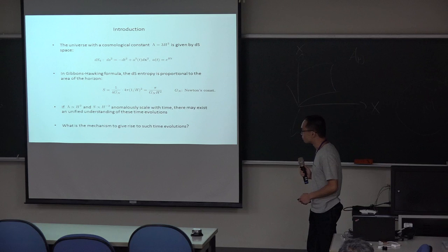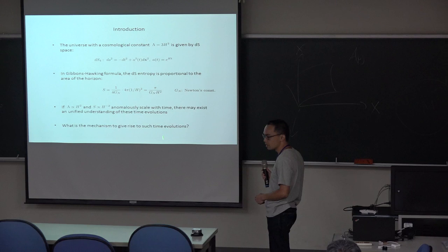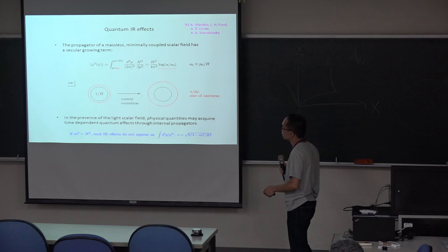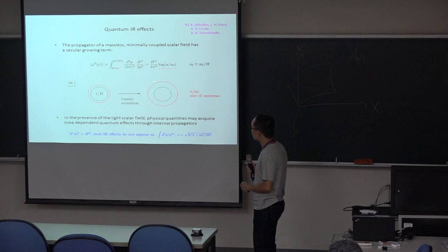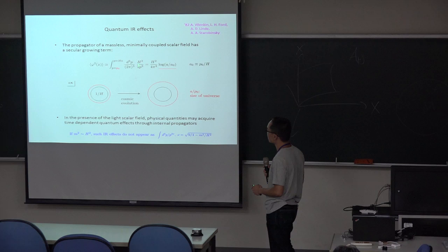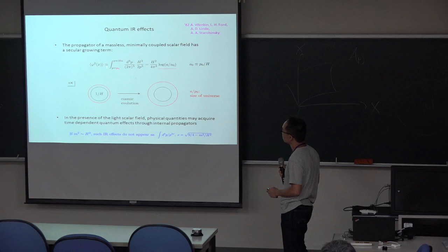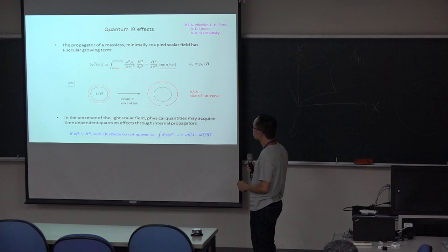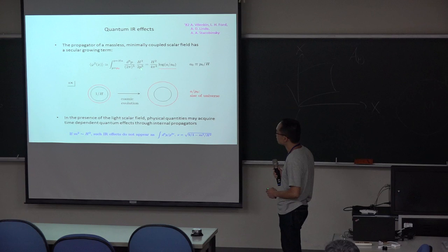Of course, the key question is what is a mechanism to generate this evolution. Let us consider the minimally coupled scalar field. Minimally coupled means the absence of direct coupling. In such a light scalar field setup, we set the upper bound on the wavelength and the lower bound on the momentum scale.